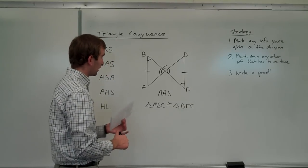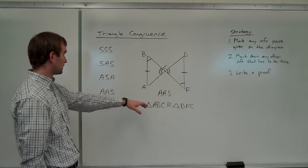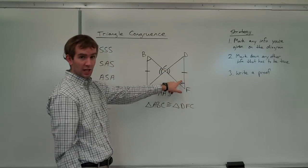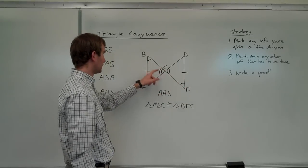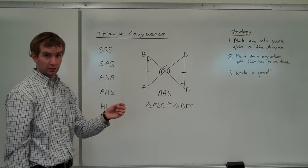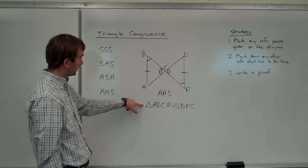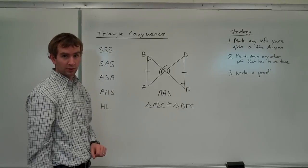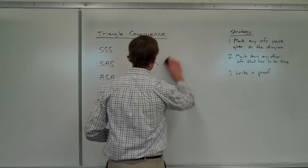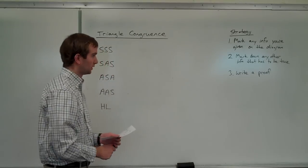If I wanted to write the proof, it'd be easy. I'd write down that side is congruent to that side — given. That angle is congruent to that angle — also given. And then finally, that angle is congruent to that angle because of vertical angles. And then my last statement would be: the two triangles are congruent because angle, angle, side. The toughest part of these is really just step two — marking down what else has to be congruent in the diagrams.